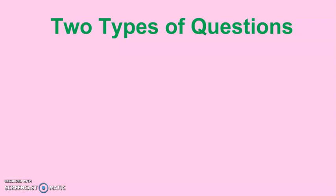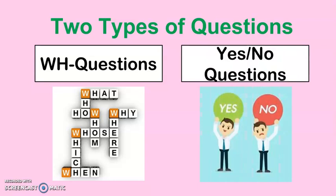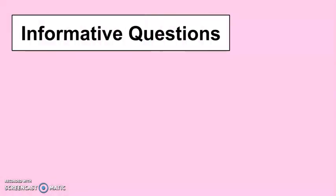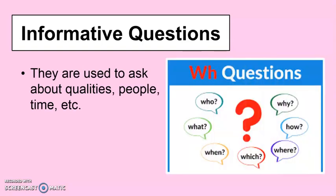Now there are two main types of questions in English: WH questions and yes/no questions. WH questions are what we call informative questions, and every time we encounter them, they consist of who, what, when, which, where, why, and how — that's why they are called WH questions.